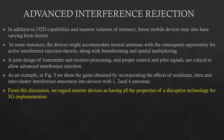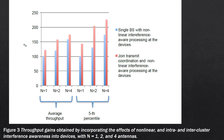Next we have advanced interference rejection. In addition to D2D capabilities and massive volumes of memory, future mobile devices may have varying form factors. In some instances, the device might accommodate several antennas with consequent opportunity for active interference rejection, along with beamforming and spatial multiplexing. A joint design of transmitter and receiver processing and proper control and pilot signals are critical to allow advanced interference rejection. As an example, in figure 3, we show the gains obtained by incorporating the effects of nonlinear intra- and inter-cluster interference awareness into devices with 1, 2 and 4 antennas. There is improvement by joint transmit coordination and nonlinear interference-aware processing at the device compared to a single base station with nonlinear interference-aware processing at the device.